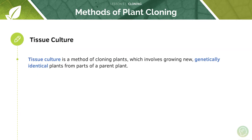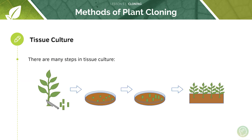First, let's look at some general methods of plant cloning. Tissue culture involves growing new genetically identical plants from parts of a parent plant. Parts of the parent plant are removed from the original plant, then put into sterile agar jelly which contains all the nutrients needed to grow. The samples eventually grow into plantlets, which are still in the agar jelly containing all essential nutrients. These plantlets are then placed in nutrient-rich compost to continue growing and will eventually become genetically identical plants.